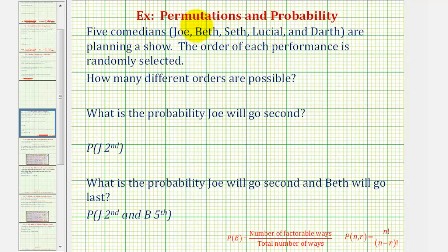Welcome to an example of permutations and probability involving permutations. For reference we have some notes down here in red for the definition of probability and the definition of a permutation. In this example, five comedians are planning a show. Their names are listed here. The order of each performance is randomly selected. The first question is how many different orders are possible.